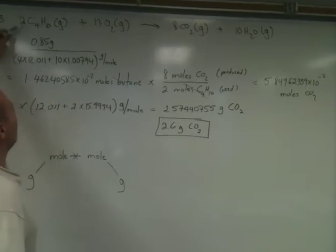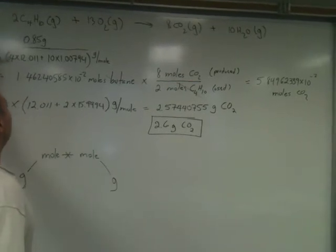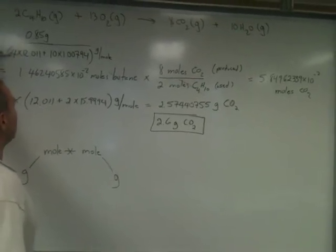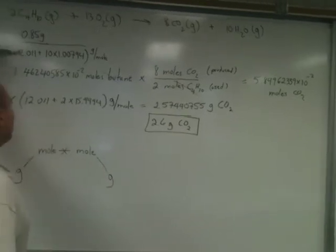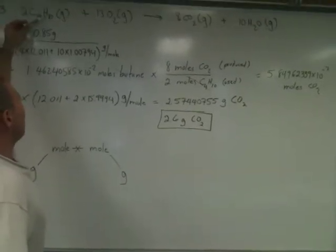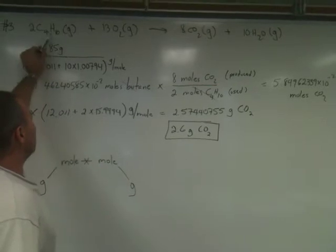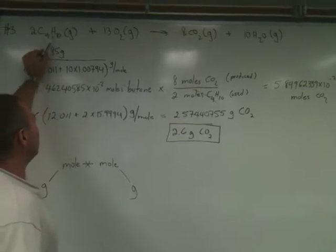We see here that we have 0.85 grams of butane. We've divided by the molar mass of butane, which is calculated by multiplying the molar mass of carbon by 4 and the molar mass of hydrogen by 10. You see there are 10 hydrogen atoms in butane.